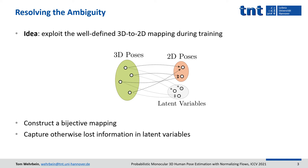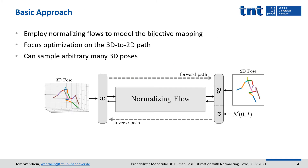Intuitively, the information otherwise lost in the forward process is captured by the latent variables. To model the bijective mapping and thus learn the posterior distribution of feasible 3D poses, we propose a normalizing flow-based method. This allows us to focus the optimization on the deterministic 3D to 2D mapping, here denoted as the forward path. The highly ambiguous 2D to 3D mapping is then mostly learned implicitly due to the invertibility of the normalizing flow, and can be further supported by additional supervision with the inverse path.